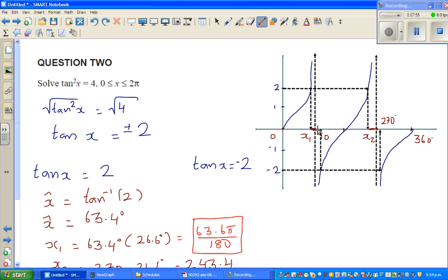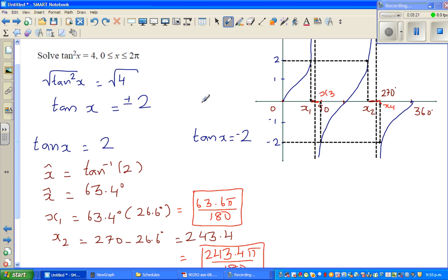By using symmetry, I'm making a guess. x1 is 26.6 degrees to the left of 90, so this should be 26.6 degrees to the right. So if this is, say, x3 and this is x4, this is 26.6 degrees to the right of 90.